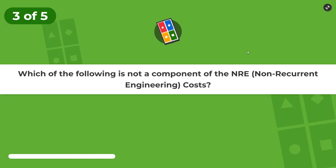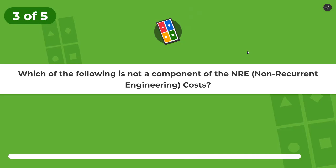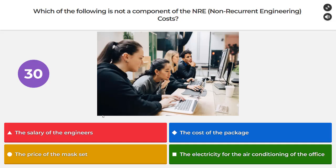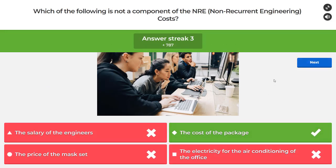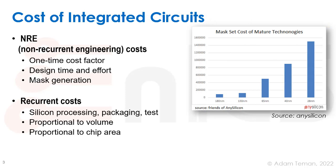Question three: which of the following is NOT a component of the NRE — the non-recurrent engineering costs? Is it the salary of the engineers, the cost of the package, the price of the mask set, or the electricity for the air conditioning? The answer is: the cost of the package.